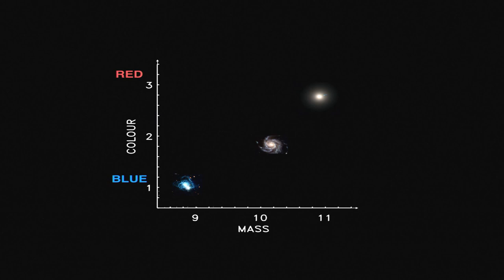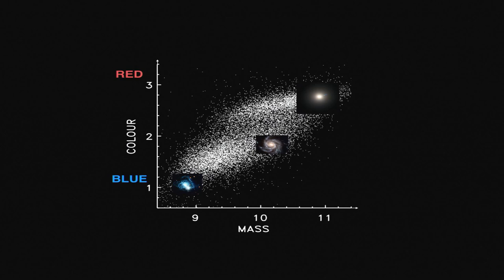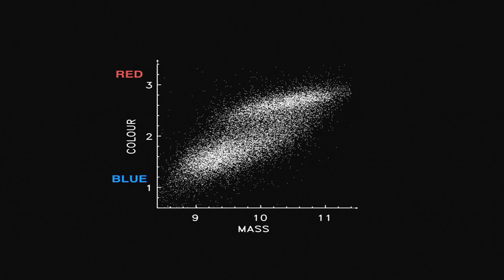We do these types of measurements for hundreds of thousands of galaxies and display them on a plot. Then we can see how structure emerges — there are two regions of higher density. Galaxies tend to be either bluish and low mass, or red and very massive. That tells us something: galaxies are not just a mass of objects with a variety of properties. There is some organisation in those properties.